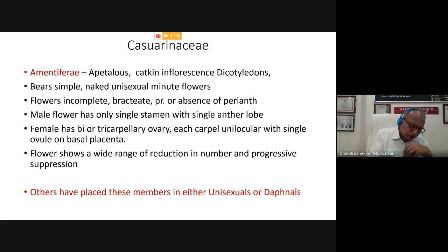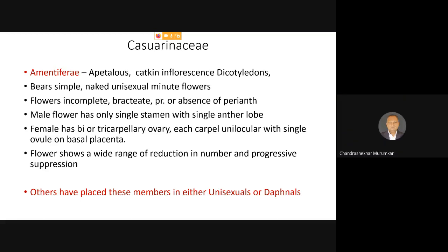Many times in other genera or families the number of stamens may be higher but they were reduced and others were staminodes — only one functional stamen was there. And the female flower is a bi- or tricarpellary ovary, each carpel unilocular with a single ovule on basal placenta. This was the assumption of the Eichler and Engler and Prantl school. They considered that the Amentiferi is the most primitive group among the angiosperms — the most primitive group of dicots. From this Amentiferi group all other members evolved, and from those members monocots evolved.